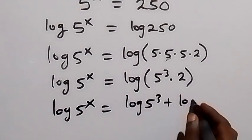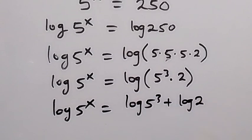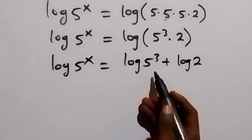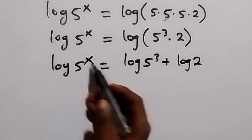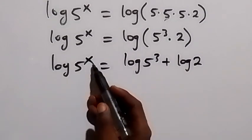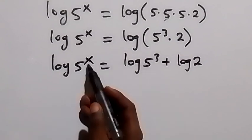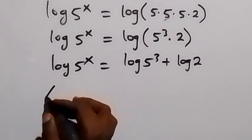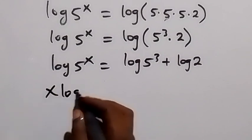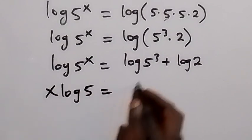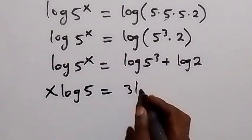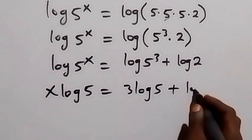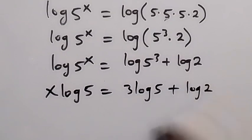In the next step we apply the law of logarithm — the power rule — we can take the power to the front. The power here to the back, so this becomes x log 5 equals 3 log 5 plus log 2.